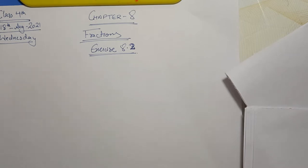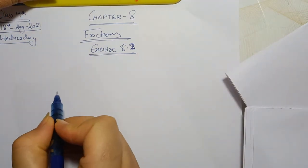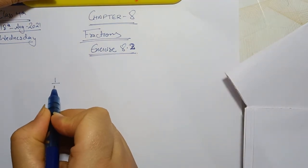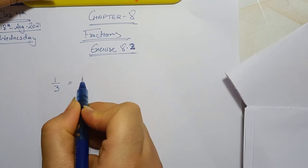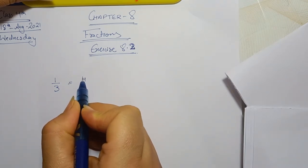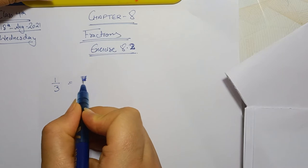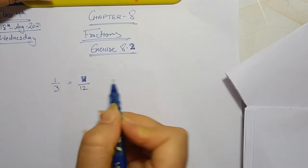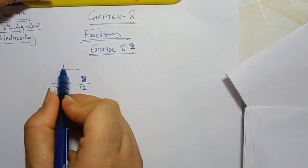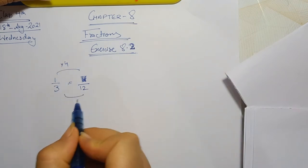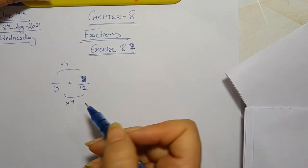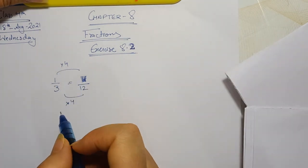We will do the section in which we fill in the blanks to make the fractions equivalent. If you are given some fractions, you have to make them equivalent. So the next type of question is: 1 upon 3 equals to blank upon 12. We will multiply this by 4, because you have to multiply the same number with both numerator and denominator.